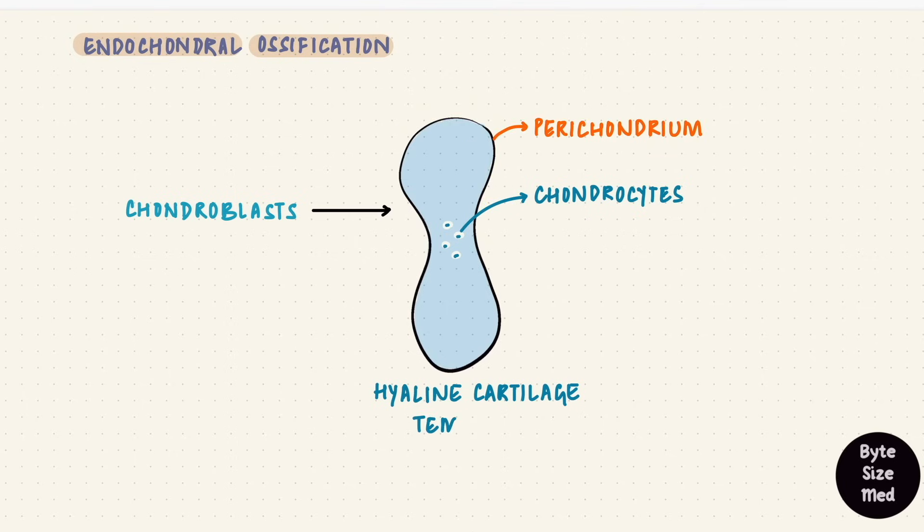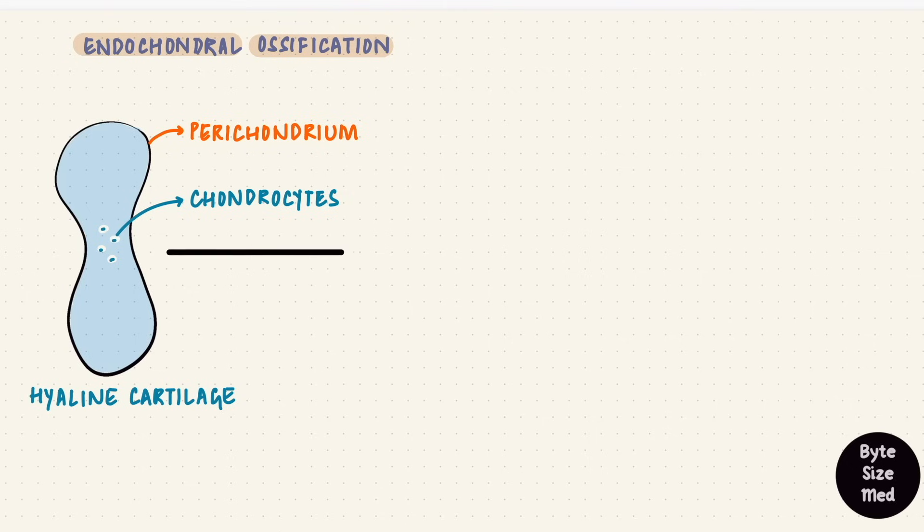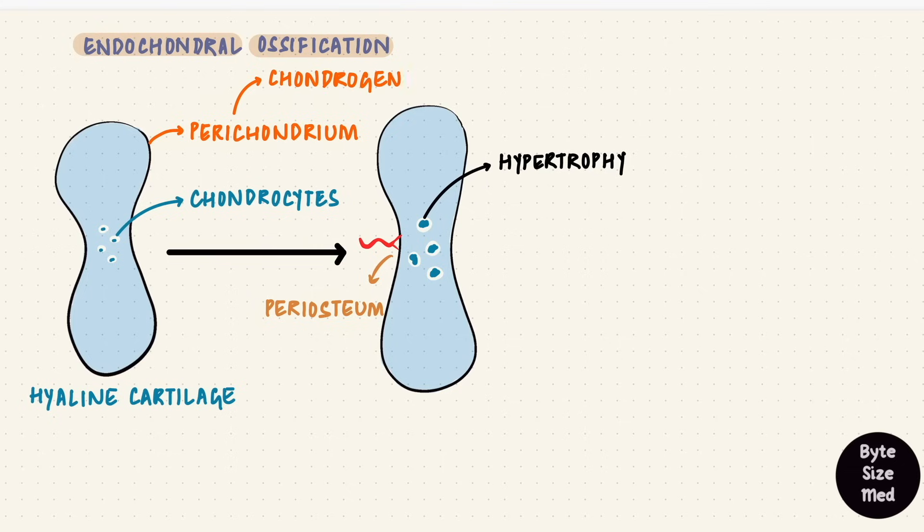This is the scaffold for the formation of bone. Some of the chondrocytes in the center swell, that's hypertrophy, and develop vacuoles. These chondrocytes compress the matrix, and that matrix starts calcifying. A part of the perichondrium near the middle of the shaft becomes vascularized. That starts changing the perichondrium to the periosteum, because these cells go from being chondrogenic cells to becoming osteogenic cells. They form osteoblasts, which synthesize the bony matrix.